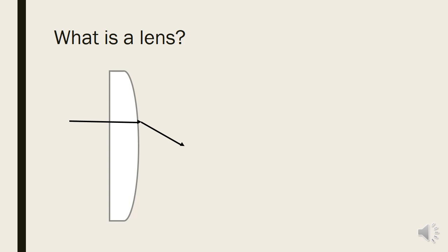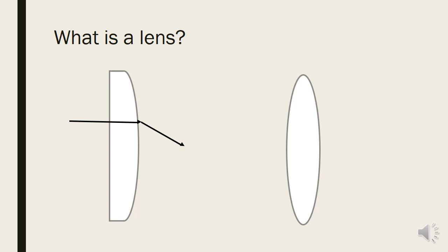So a lens could have one side curved and the other plain — these are called flat lenses — whereas when both sides are curved, those are called curved lenses. In the second diagram, the ray starts bending at the first surface and bends further at the second surface, leading to a particular amount of refraction.